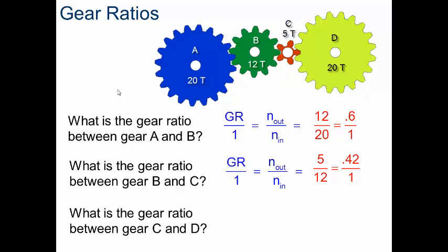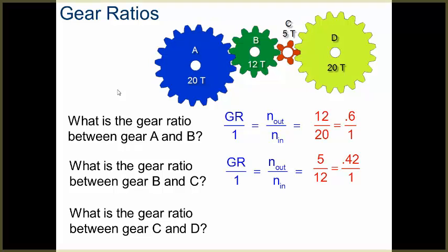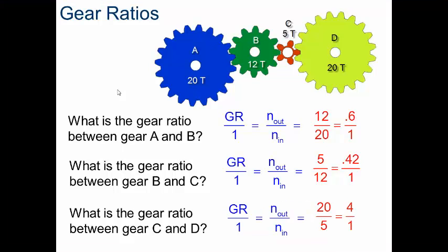If I find the gear ratio between gear C and gear D, same thing, I'm going to use my number of teeth out over my number of teeth in, so 20 over 5 gives me a gear ratio of 4. Finally, I get a gear ratio greater than 1, again, because I'm going from a small gear to a large gear.